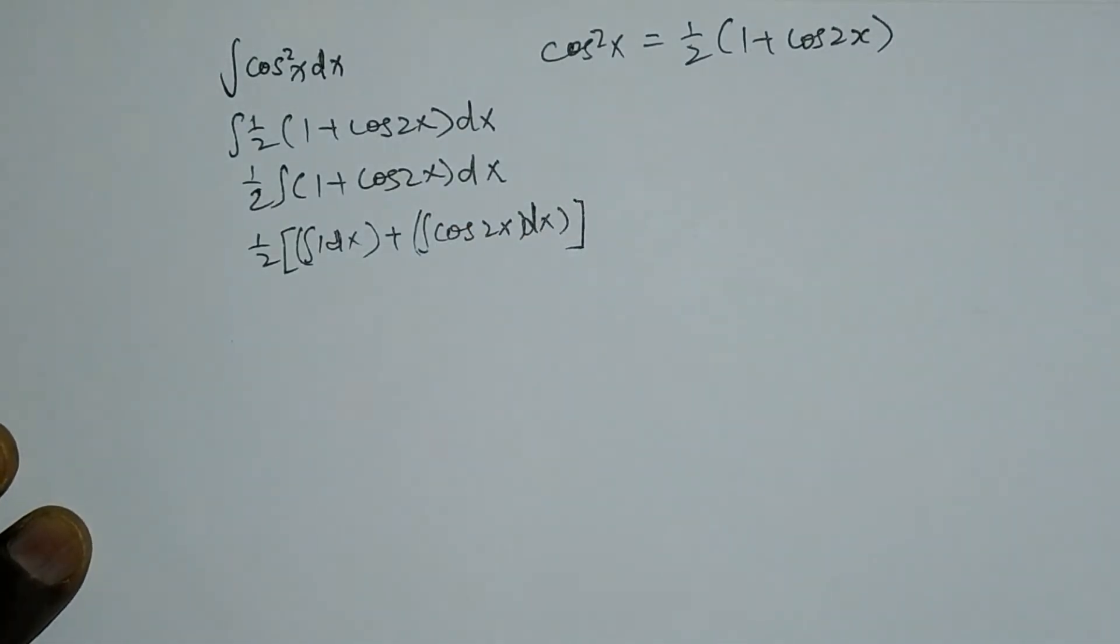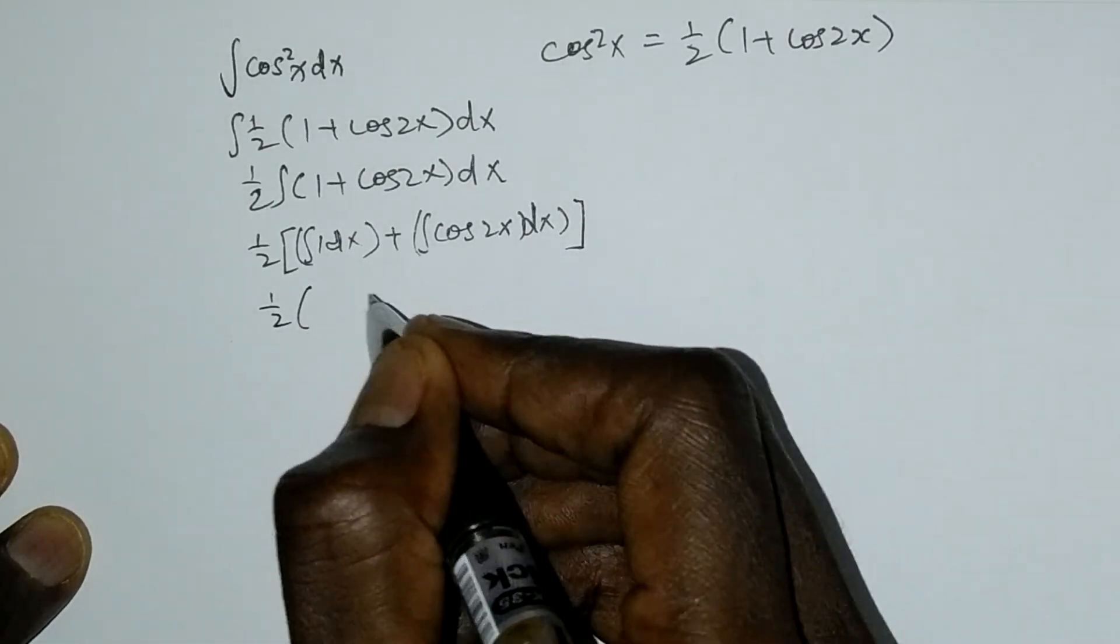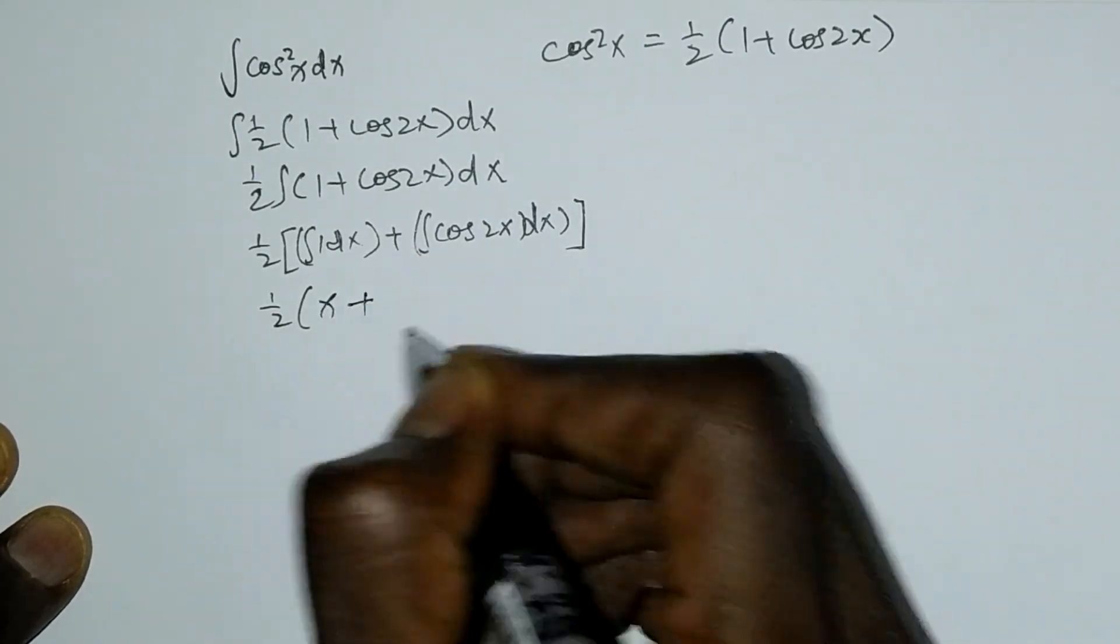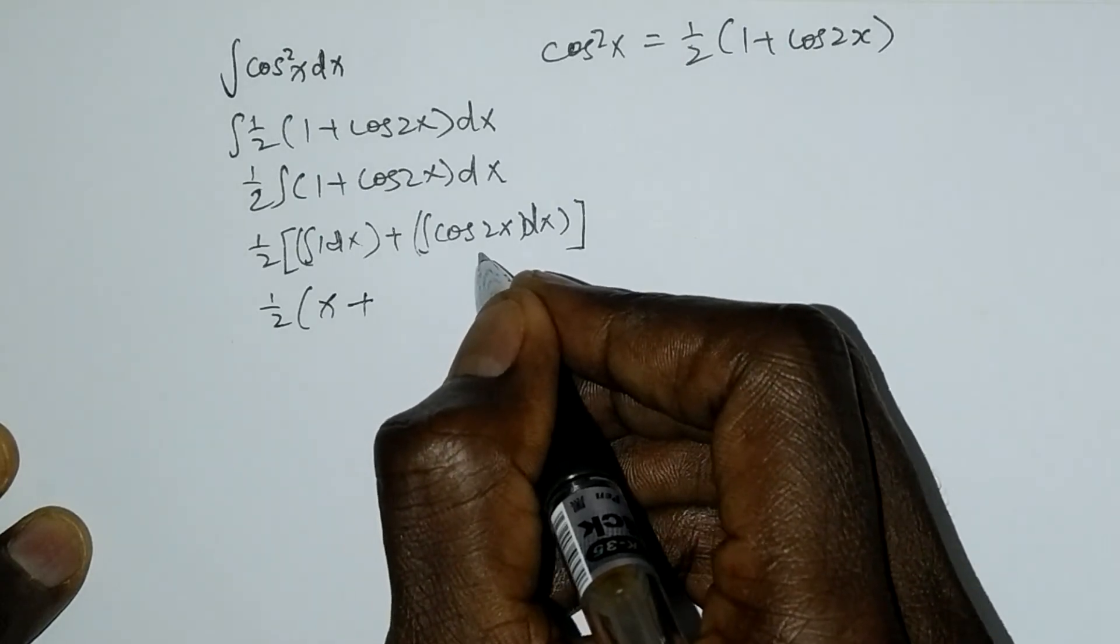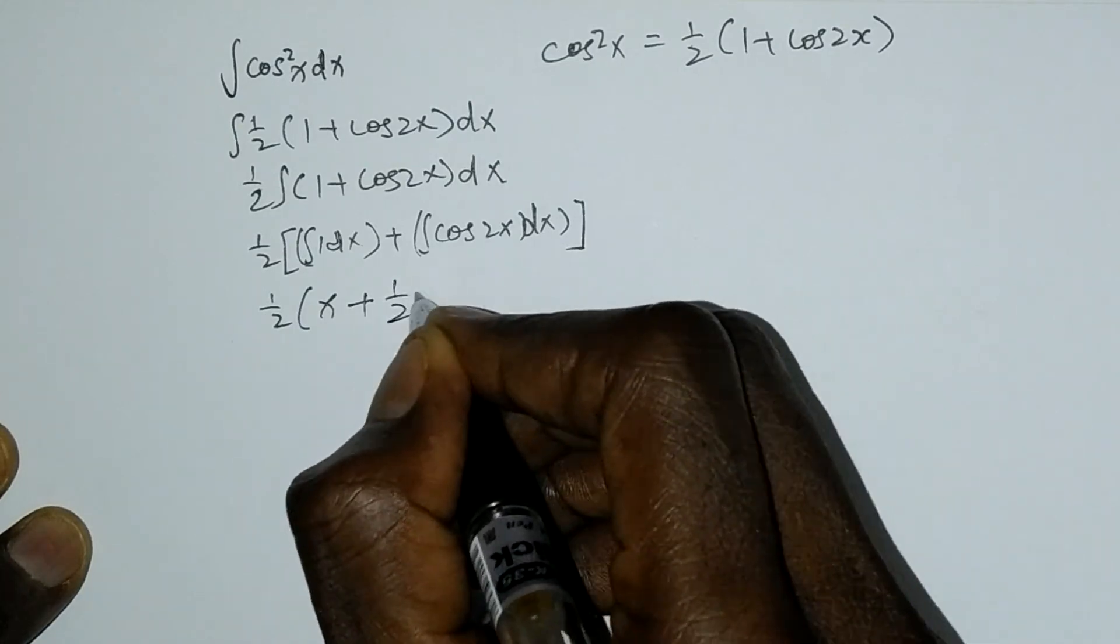Now we can integrate. 1/2 of [integral of a constant is going to be x, plus integral of cosine is sine, so you have 1/2 of sine 2x].